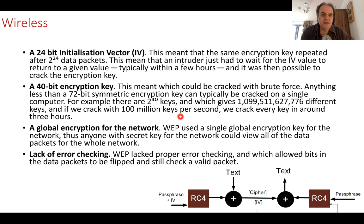If we take 100 million keys to crack per second, which is actually quite slow by these standards, the whole network could be cracked within three hours. It was a 40-bit encryption key. There's a global encryption key for the whole network which meant that once it was cracked, the intruder could read all of the communications. And it also lacked any form of proper error checking where bits could be flipped.